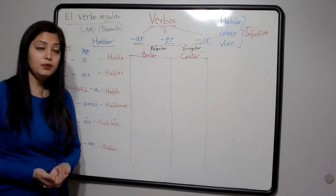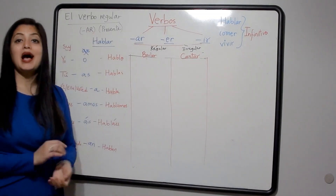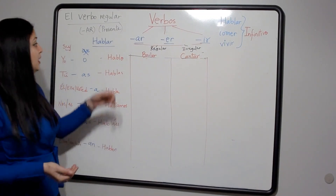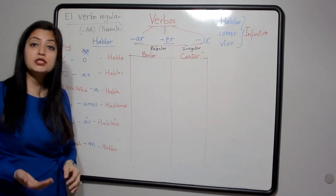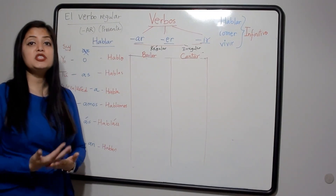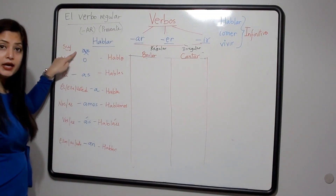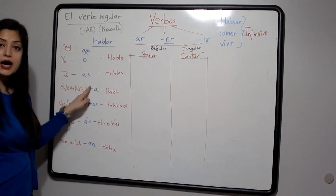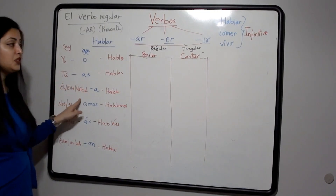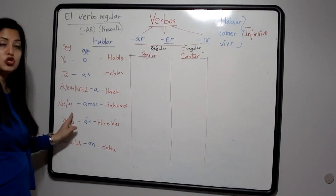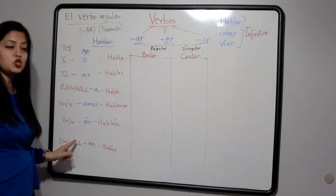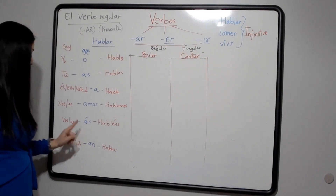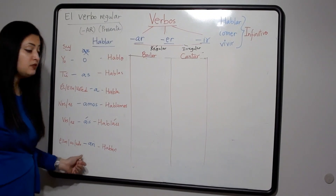Let us take the verb hablar, which means 'to speak.' To conjugate a regular verb ending in AR, we remove AR and add these endings. For yo, we add -o. For tú, we add -as. For él/ella/usted, we add -a. For nosotros/nosotras, we add -amos. For vosotros/vosotras, we add -áis — be very careful with the accent mark here. And for ellos/ellas/ustedes, we add -an.